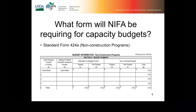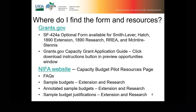Where do you find this form? Grants.gov. That optional form is available for the programs indicated earlier. There is also more information in the capacity grant application guide, which can be found in grants.gov. You go into your preview opportunities and there is a button that says 'Download Instructions.' I'll show you a screenshot of what that looks like in just a second.